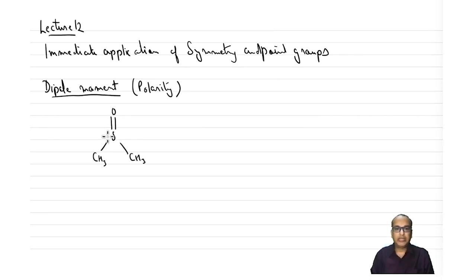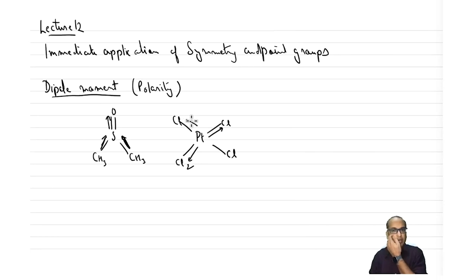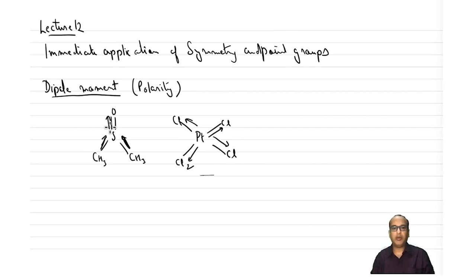For example, in one molecule the dipole moments along the bonds do not cancel each other, whereas in a symmetric molecule the dipole moment along one side cancels against the other side. So one molecule will not have any net dipole moment — that is a non-polar molecule — while the other will have a dipole moment and is called a polar molecule. Using the rules of symmetry and point groups, we can identify whether a molecule has a dipole moment or not.